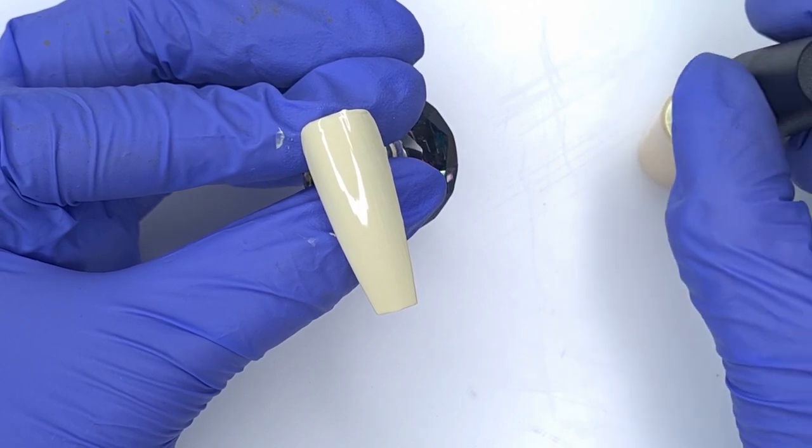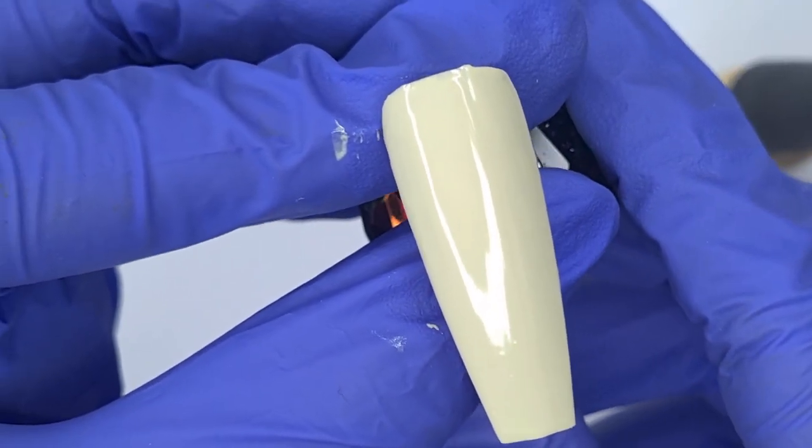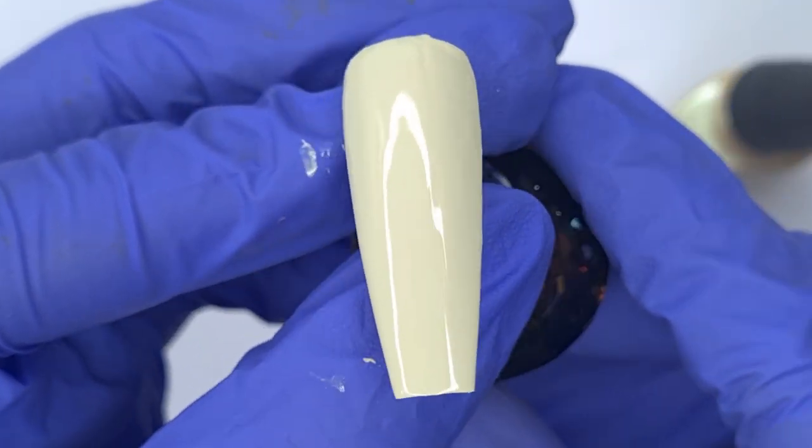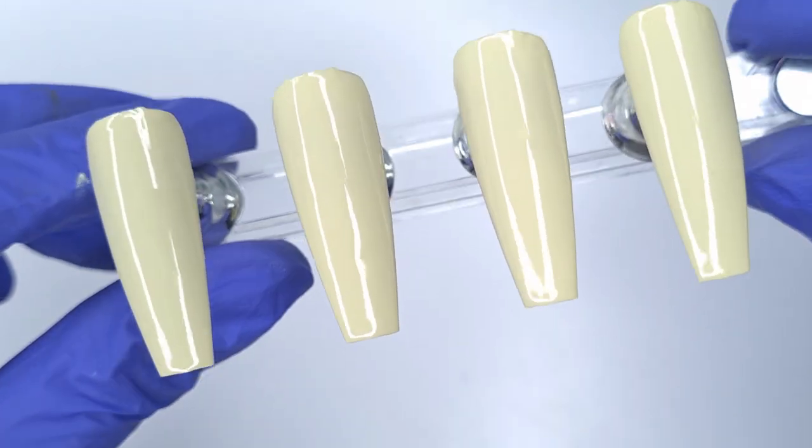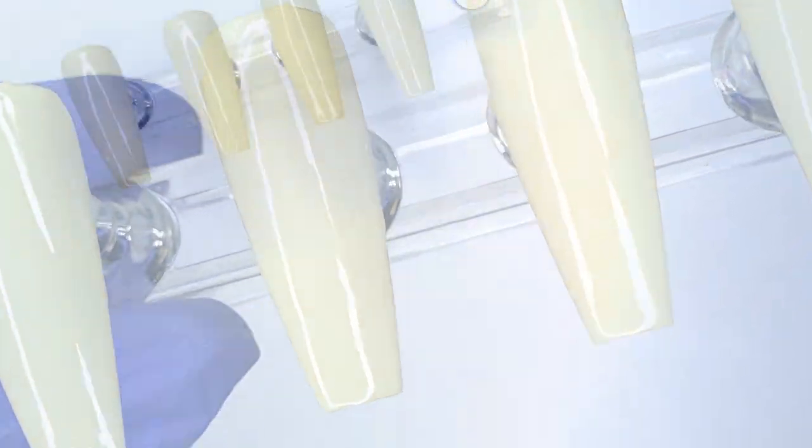So now that I've got that second coat of color applied I'm going to pop that in to cure for 30 seconds and I did off camera do exactly the same on all four nails. So here are our bases ready to go for our nail art.